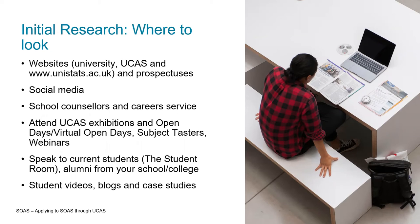You can also look at websites such as UniStats, which will give you a comparison of different universities. You can also look at the social media of each institution — that's really good to do because often there's a lot of student engagement. You can see what current students feel about their time at particular universities, what things they particularly like, and possibly see a day in the life. You can also talk to your school counsellors and career advisory service about what you want to do in the future.